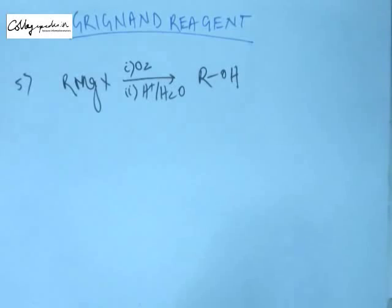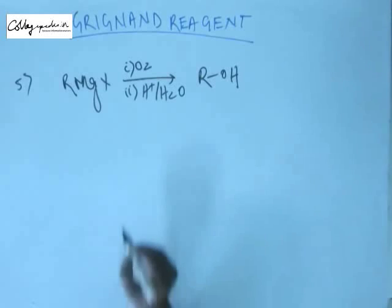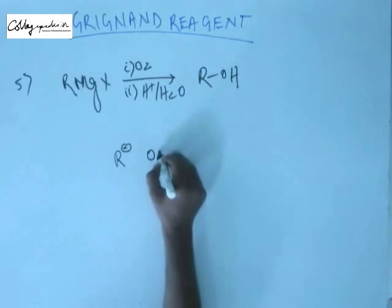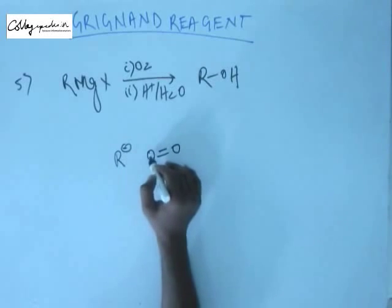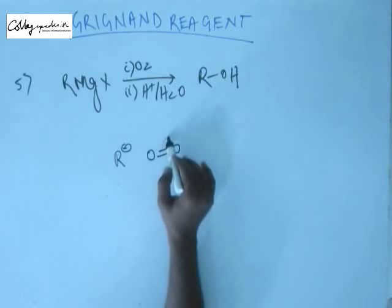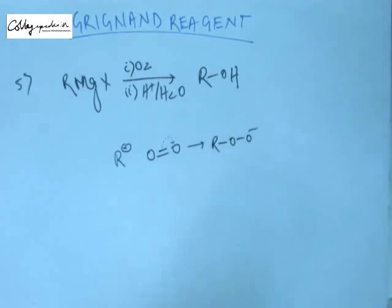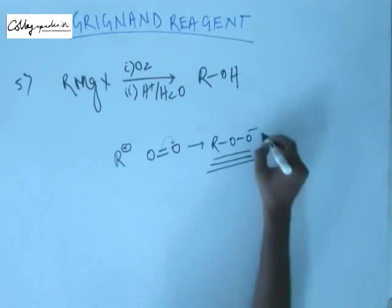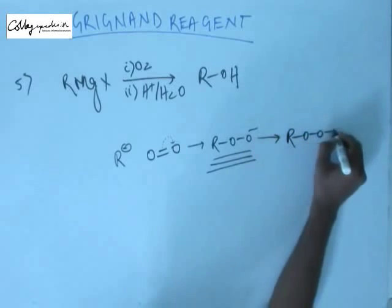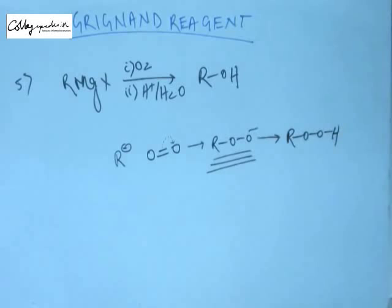This reaction happens because oxygen has two unpaired electrons. With those two unpaired electrons, oxygen forms a bond with R⁻. You can see it this way: this R⁻ is forming a bond with one of the oxygens, resulting in movement of this pi bond to another oxygen. When this happens, we will have a certain intermediate structure. This will be the intermediate formed after the reaction of O₂ with the Grignard reagent. When you add H⁺ onto this, it will get neutralized, forming a peroxy linkage.